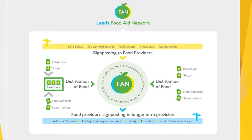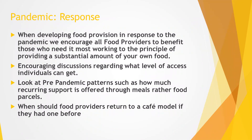When developing food provision in response to the pandemic, we encourage all food providers to benefit those who need it most, working to the principle of providing a substantial amount of your own food. As a lot of people have benefited from the structure the city set up through purchasing food through the council, Rethink Food, and Fair Share, that will start to wane. So if you want to carry on — particularly beyond the end of June — how can you supply a good amount of your own food and then have it topped up by Fair Share and Rethink Food?